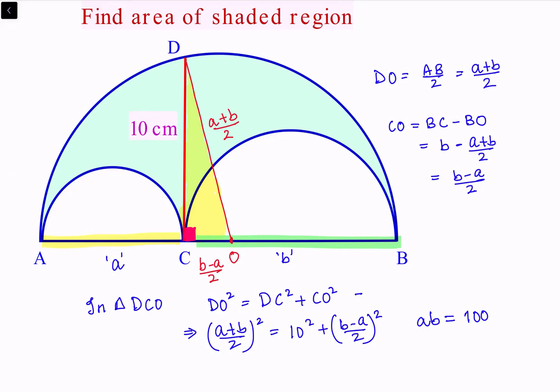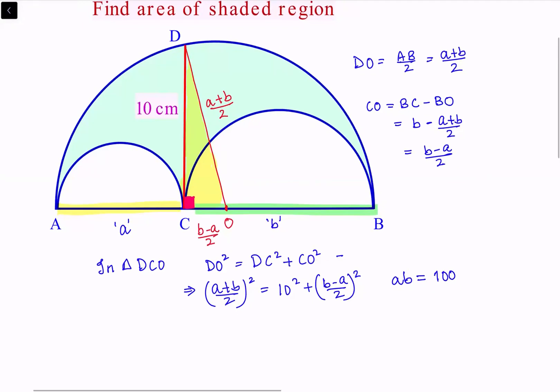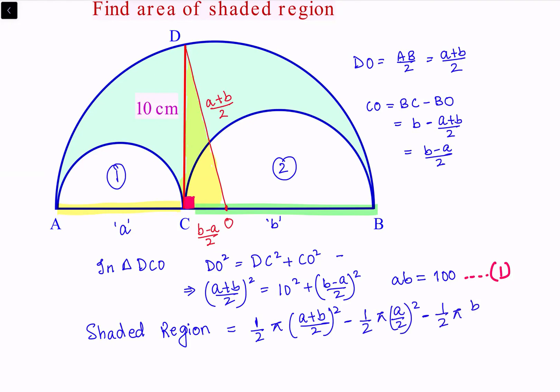Let's see what the shaded region is. The shaded region is the area of the biggest semicircle, which is (1/2)π((A+B)/2)², minus the area of the first semicircle (1/2)π(A/2)², minus the area of the second semicircle (1/2)π(B/2)².